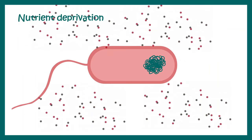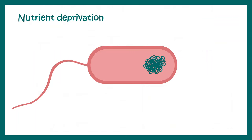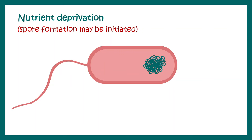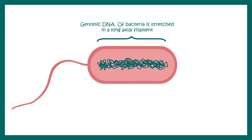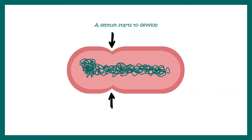Now let's look at this process in a bit more detail. If there is a severe nutrient deprivation, the bacteria has to decide whether it would undergo spore formation or die — it would choose spore formation. In this case, the genomic DNA of the bacteria would be replicated, and the bacteria would now form an axial filament spanning throughout the cell. There would be a furrow occurring at a particular region of the bacterial cell, like a septum.